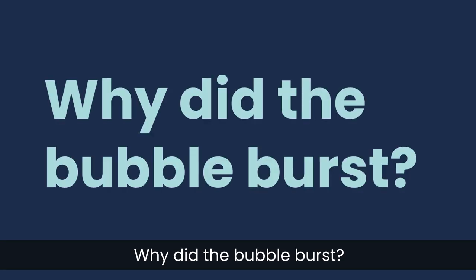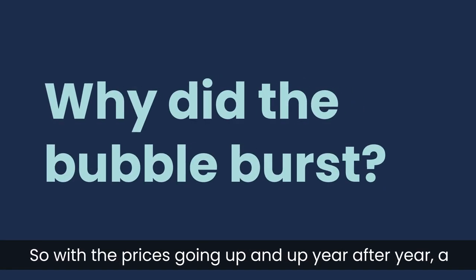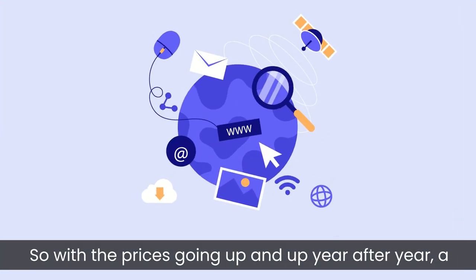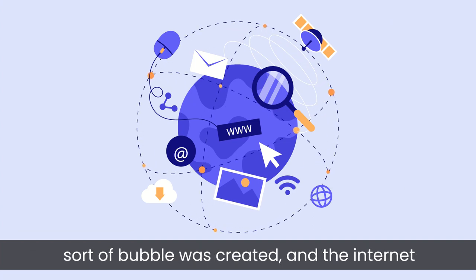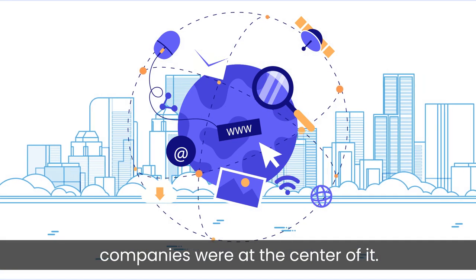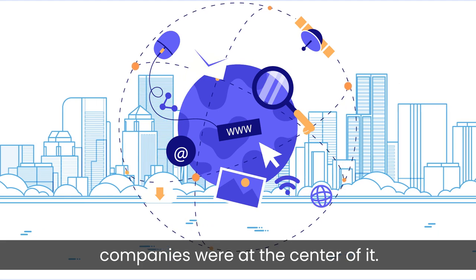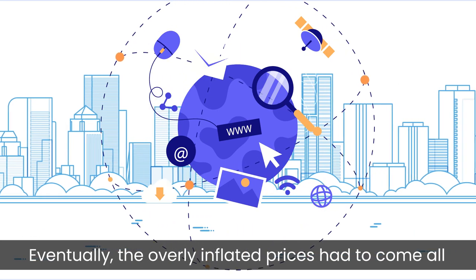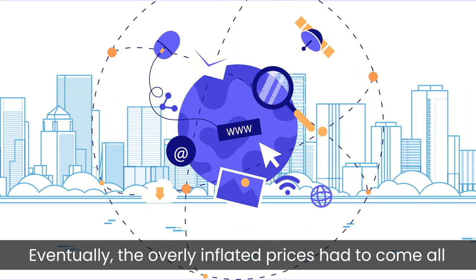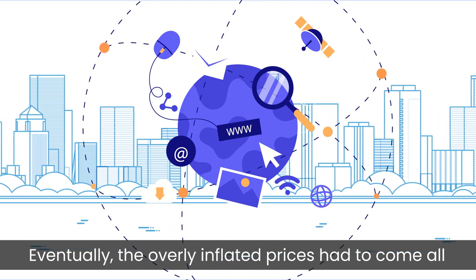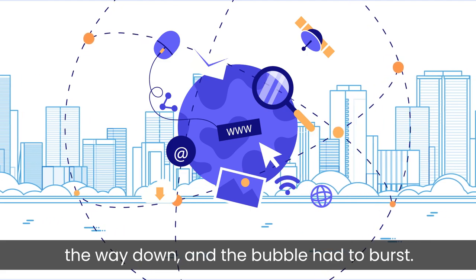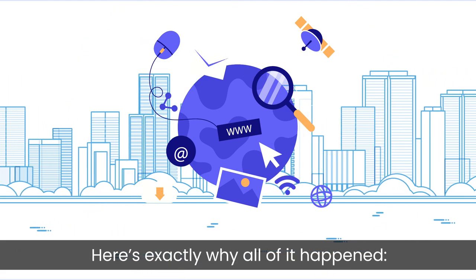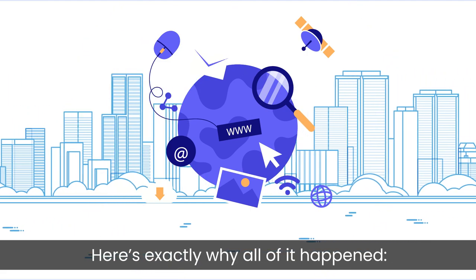Why did the bubble burst? With prices going up year after year, a sort of bubble was created and the internet companies were at the center of it. Eventually, the overly inflated prices had to come all the way down and the bubble had to burst. Here is exactly why all of it happened.